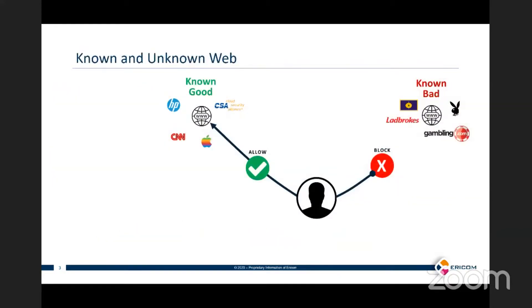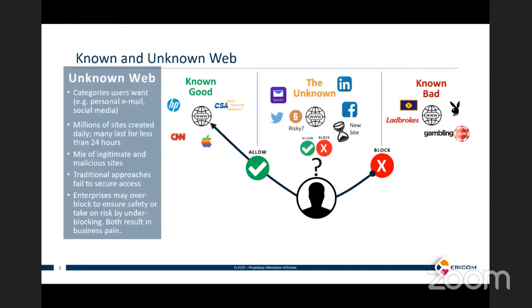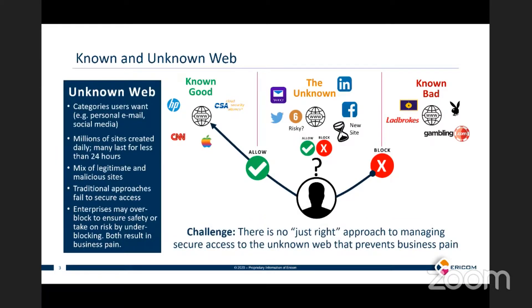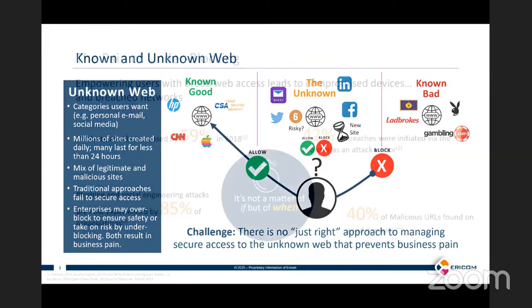A lot of our customers talk to us about the known good and the known bad — those are fairly straightforward to deal with using most security tools today. With the known good, we can allow whitelists, and we create blacklists for the known bad. The really tough area is the unknown. A lot of times you'll see uncategorized sites, new sites that are fluxing up and down. As those sites come up uncategorized, your security tools often won't know how to deal with them. You also have the concept of over-blocking, sometimes just to be cautious.